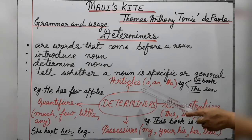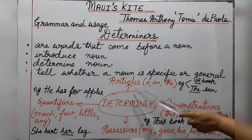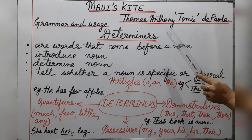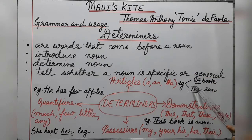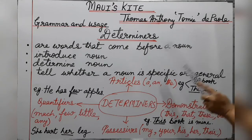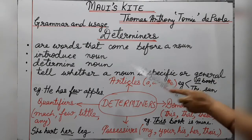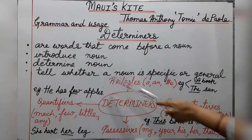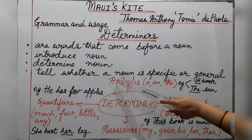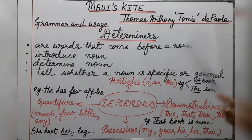We will begin with the first type: articles — a, an, and the. Determiners come before a noun. When we say 'a book,' book is the noun and we are using the article 'a.' So 'a' is a determiner — it comes before the noun, introduces it, and tells us that it can be any book, so it is talking about a noun that is general, not specific.